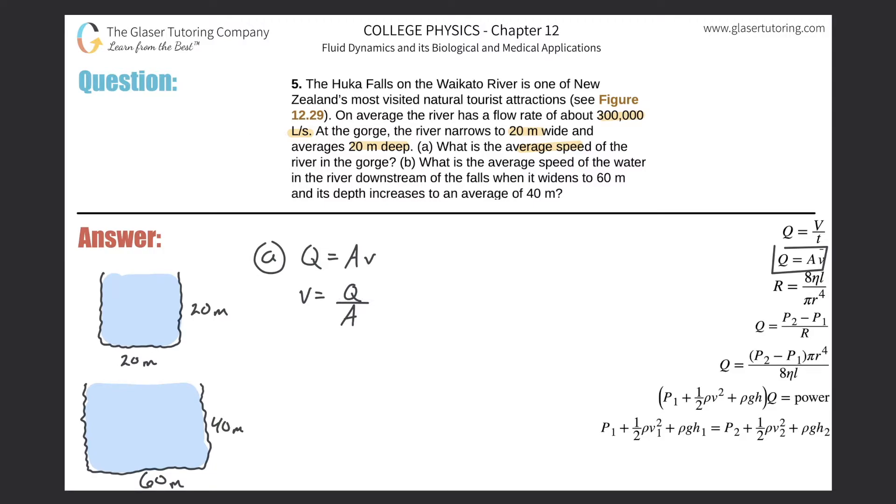You can simply take this value and divide it by 1000. They also want us to find the area, but the area of this thing is not a circle. They told us it's 20 meters wide by 20 meters deep, so it's basically square.